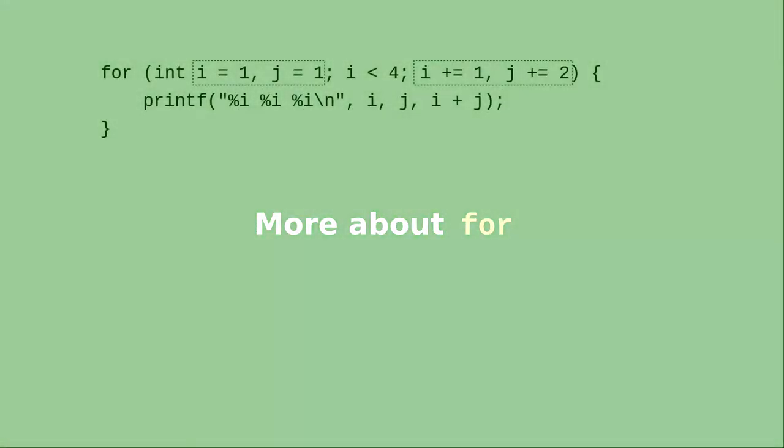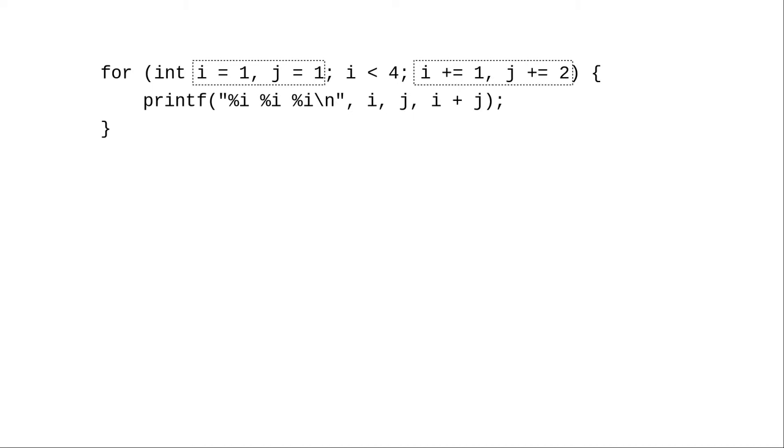You can set more than one variable in a for-loop's initialization, and you can do more than one action after each iteration. You separate the initializers and actions with commas.